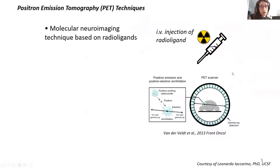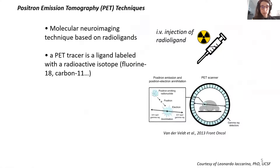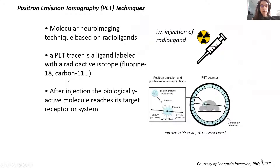So how does this work? PET is based on radioligands. We inject a radioligand — a tracer that is essentially a ligand labeled with a radioactive isotope, which in the case of FDG PET is fluorine-18. After injection, this molecule reaches its target. In the case of FDG PET, this target is hexokinase. FDG, an analog of glucose, gets phosphorylated by hexokinase and is trapped in the brain. Thanks to the isotope, there is emission of a positron that annihilates with an electron, generating two gamma rays that are detected — and this is what allows us to say something about the biological process of interest.